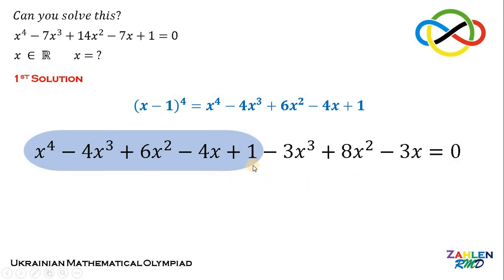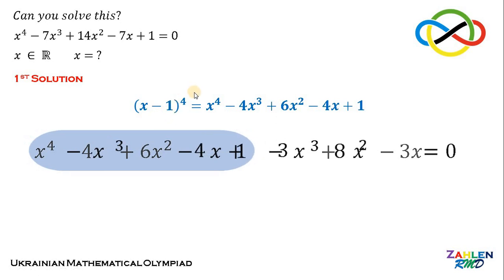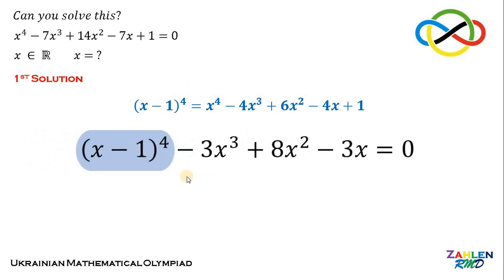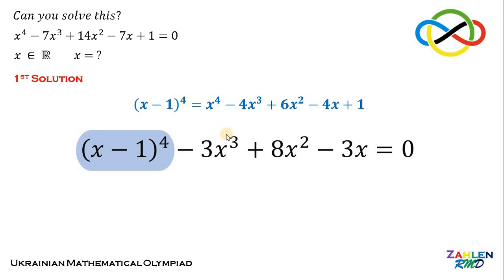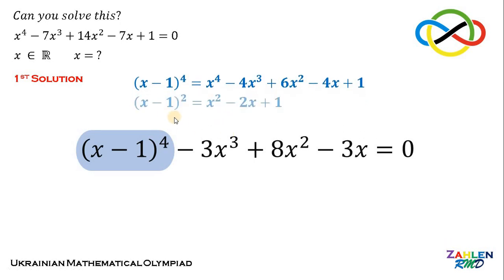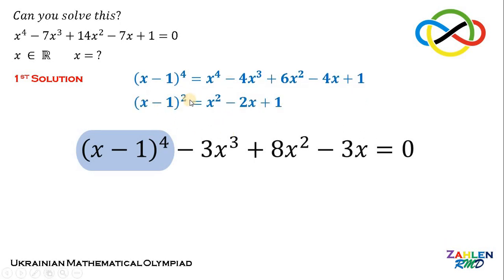Notice that the first group of terms is equivalent to (x minus 1) raised to the fourth power, leaving us with (x minus 1)^4 minus 3x cubed plus 8x squared minus 3x. At this point, we will also use the expansion of (x minus 1) squared, which equals x squared minus 2x plus 1.